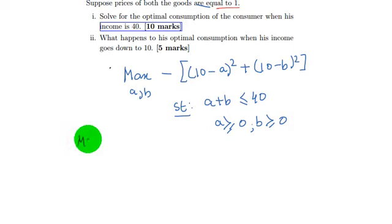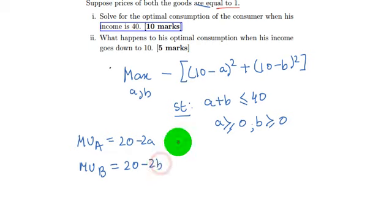Therefore the marginal utility of A is equal to 20 minus 2A, and marginal utility of B is equal to 20 minus 2B. Now we will equate both of them to 0.